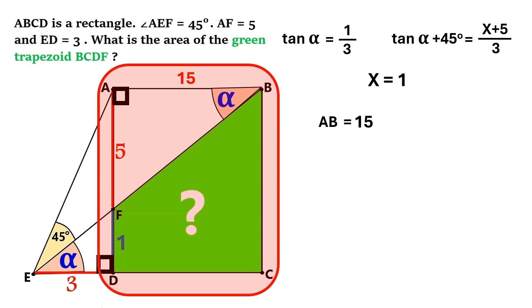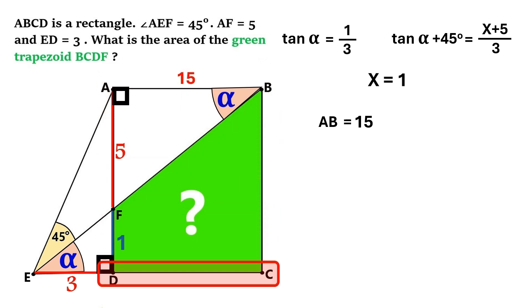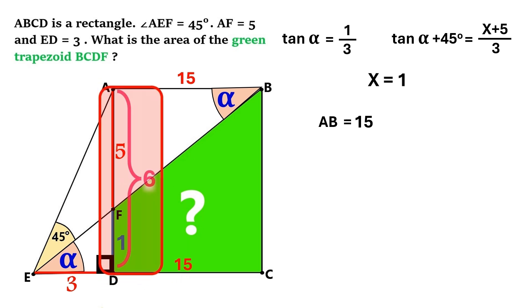And we find that AB is 15. So let's put 15 up here. And this shape is a rectangle. Which means this side DC is 15 too. And it is clear that this side AD adds up to 6. So this opposite side BC must also be 6.